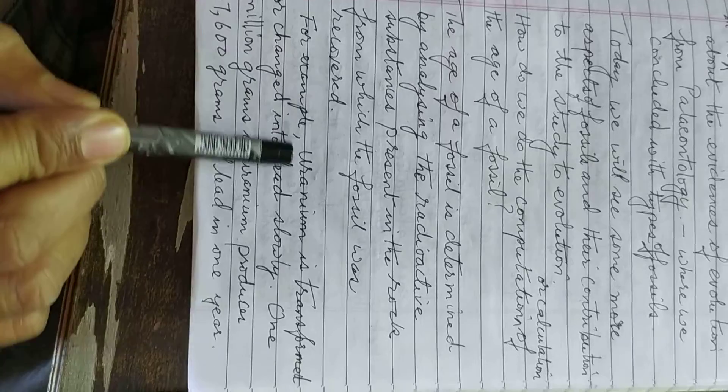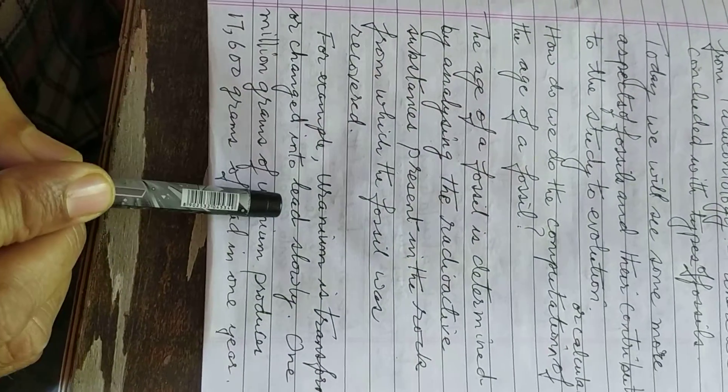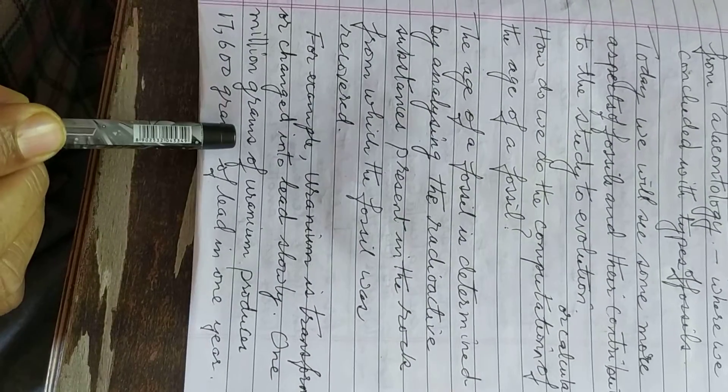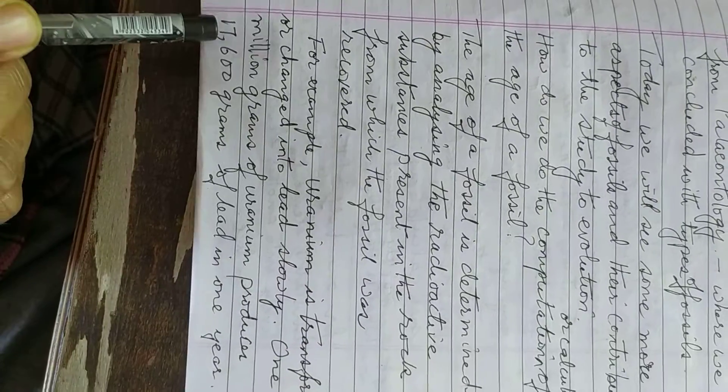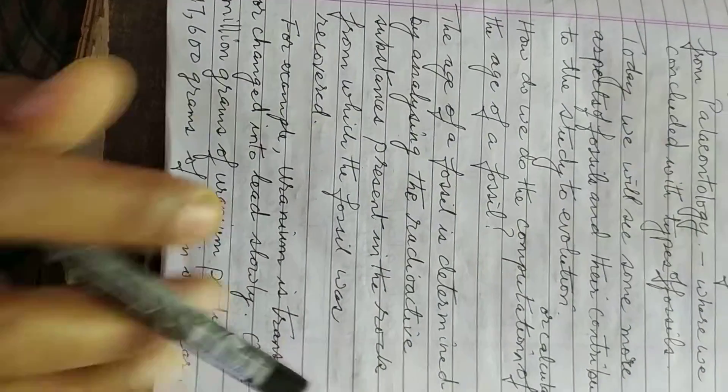For example, uranium is transformed or changed into lead slowly. One million grams of uranium produces 17,600 grams of lead in one year.